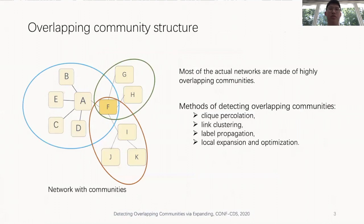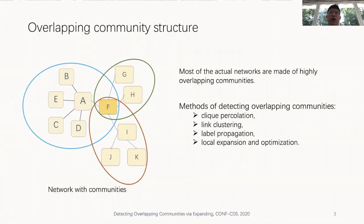Most actual networks are made of highly overlapping cohesive groups of nodes. Overlapping community structure, as an extension of original community structure, allows a vertex to appear in several different communities, and it often appears in complex networks, especially in social information networks. For example, in a social network, a social circle can be viewed as a community and one person may belong to several different communities according to different social relationships. Many methods of detecting overlapping communities have been proposed, such as clique percolation, link clustering, label propagation, and local expansion and optimization.